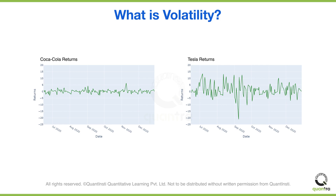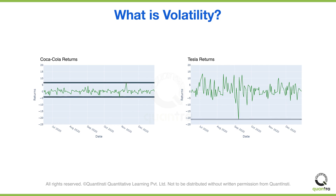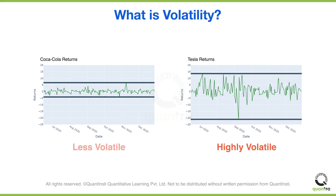In the left graph, the daily returns are hovering between minus 4 and 6 percent, whereas in the second graph, the returns are moving from minus 20 to 15 percent. Based on this, we can conclude that Tesla is a highly volatile stock and Coca-Cola is a less volatile stock.